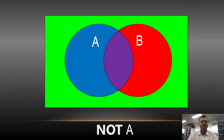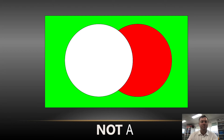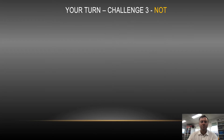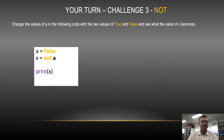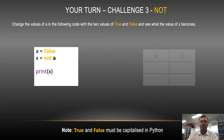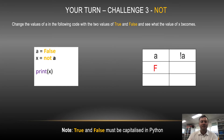So if we had everything that's not A in this case — pause the video and try and work out what colors would be involved. Hopefully you picked up it was the red and the green. So have a go now in Python — build this little bit of code, change A from false to true, and see what happens. And hopefully what you see is it just flips the print statement.